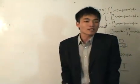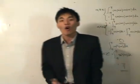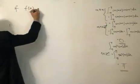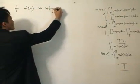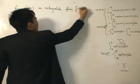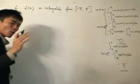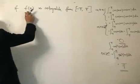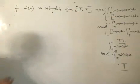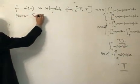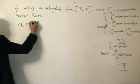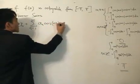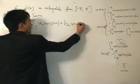Fourier Analysis involves expanding or representing certain functions as an infinite series or integrals of trigonometric functions. If f(x) is integrable from minus pi to pi, the Fourier series is: a₀ plus the summation from n equals 1 to infinity of aₙ cosine(nx) plus bₙ sine(nx).